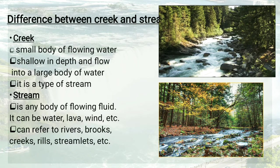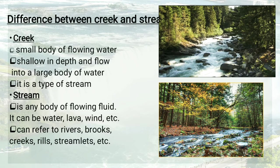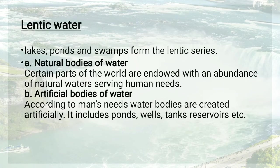A stream is any body of flowing fluid — it can be water, lava, or wind — and can refer to rivers, hooks, brooks, creeks, rills, and streamlets. The above figure shows the creek and the below one shows the stream. The difference is that creeks are small and shallow, while streams are deeper flowing bodies.